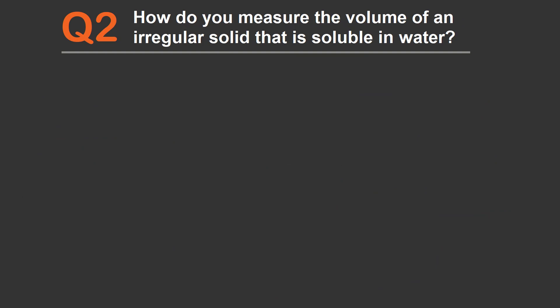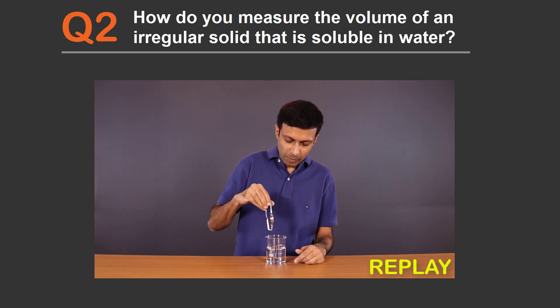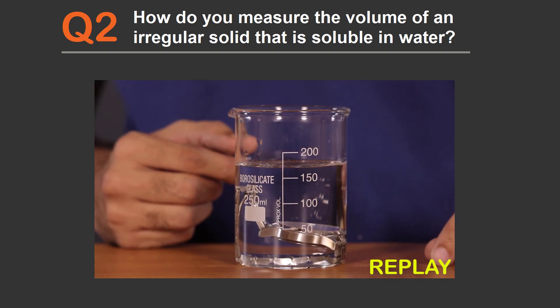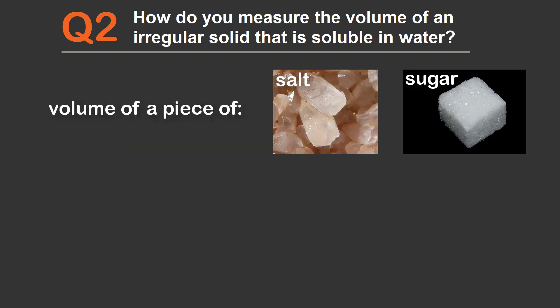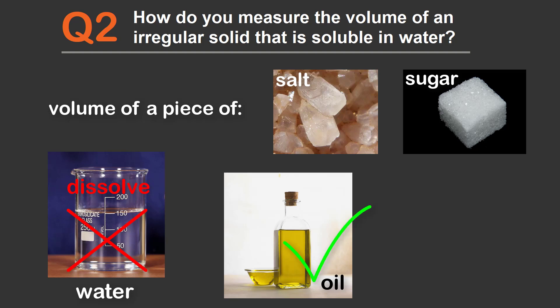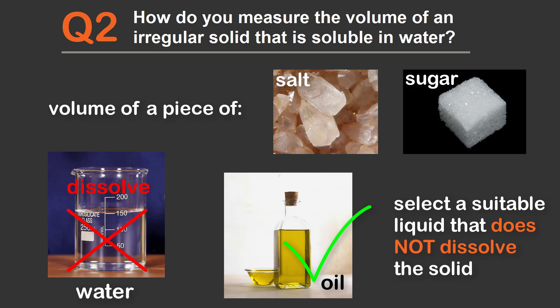Question two: how do you measure the volume of an irregular solid that is soluble in water? In this video we measured the volume of a watch, an irregular solid, by immersing it in water — obviously the watch is not soluble in water. But if you need to measure the volume of a piece of salt or sugar, you can't dip it in water since it will start dissolving and the measurement won't be accurate. Instead, you need to select a liquid that does not dissolve the solid.